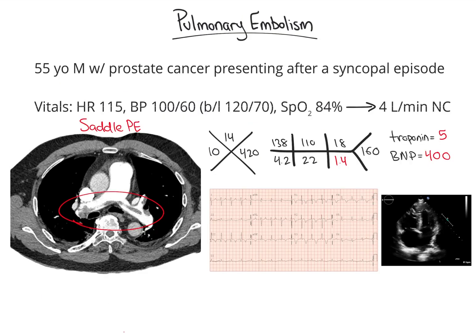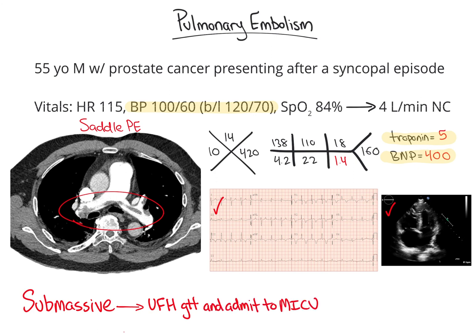Let's return to our 55-year-old patient with a saddle PE. He has evidence of RV dysfunction on labs, ECG, and imaging, but is currently hemodynamically stable. Therefore, we can classify his PE as submassive. An appropriate treatment strategy would be to start the patient on an unfractionated heparin drip for anticoagulation and admit to the medical ICU for close monitoring to ensure he does not experience further hemodynamic decompensation. If this were to occur, alteplase could be administered to hopefully avert further decline.